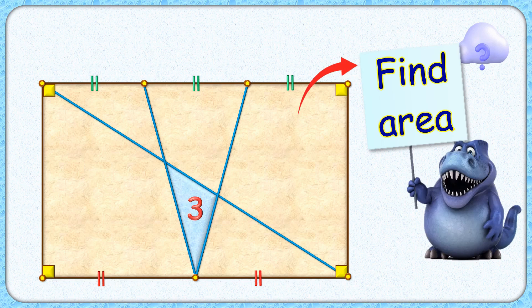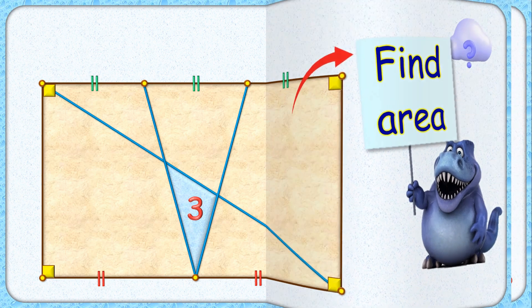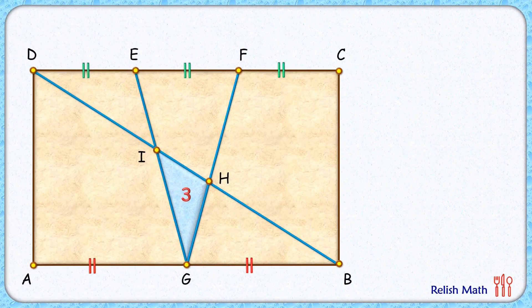Welcome everyone. The interesting question given to us features a rectangle where a triangle is formed by joining points that trisect the top length of the rectangle, and one point that bisects the bottom length. With this given data, we have to find the area of the full rectangle. Let's check this simple and elegant solution.